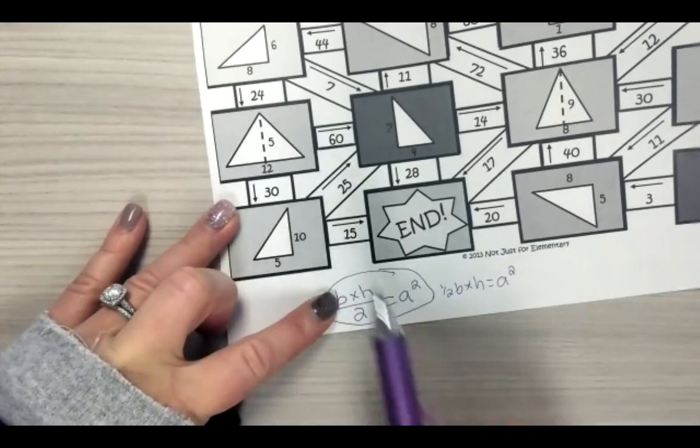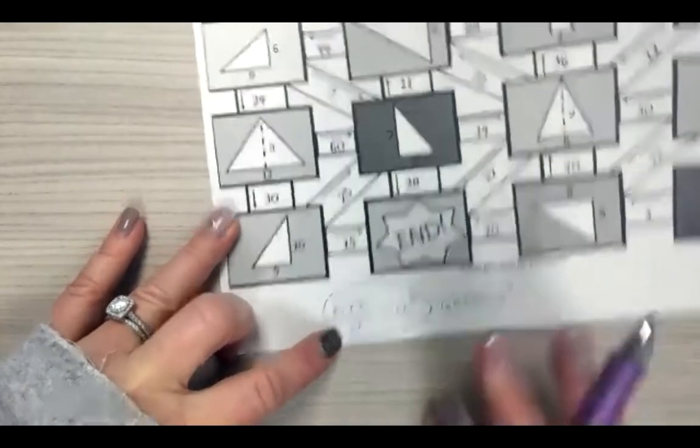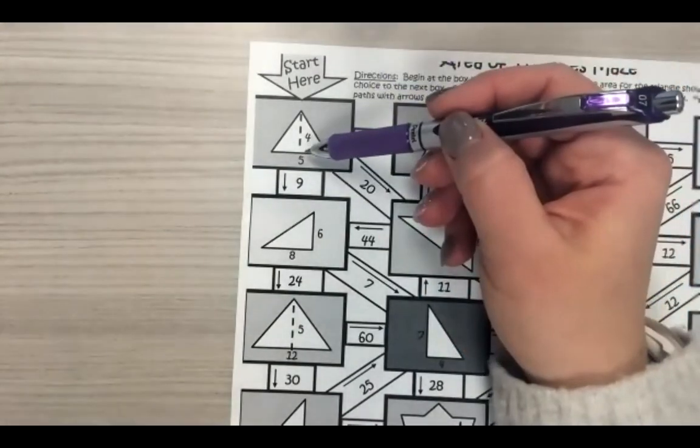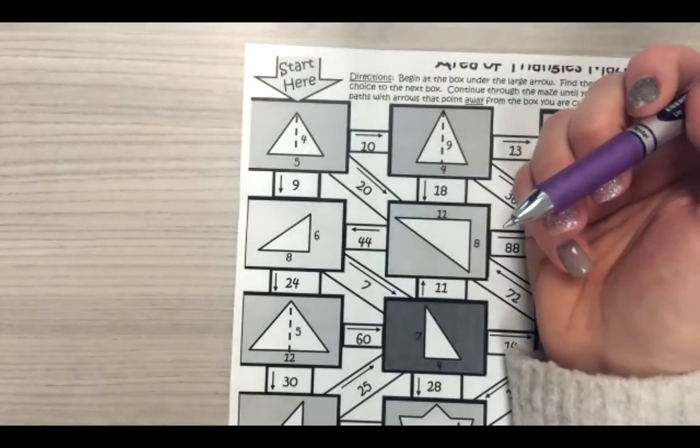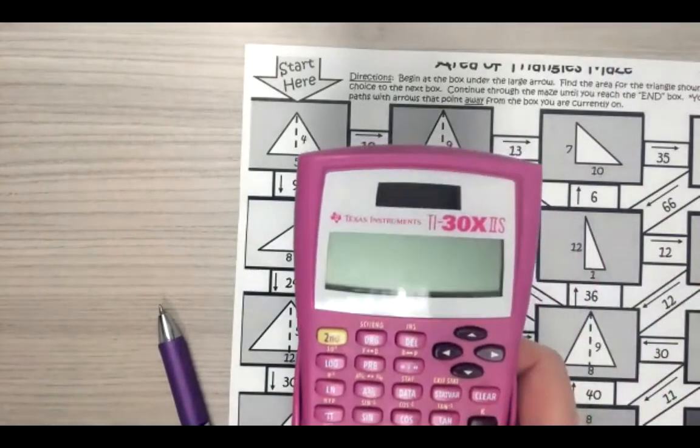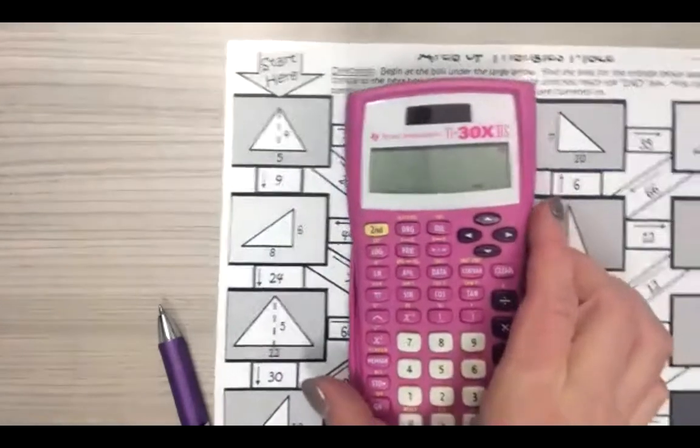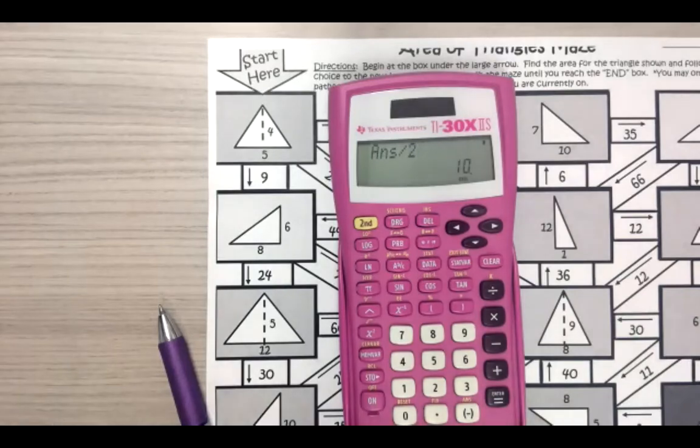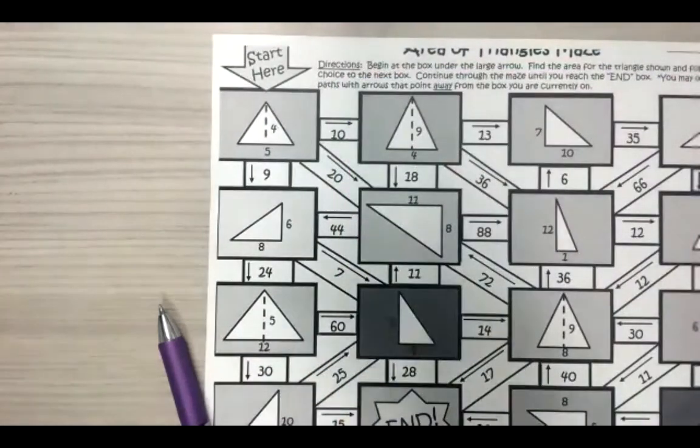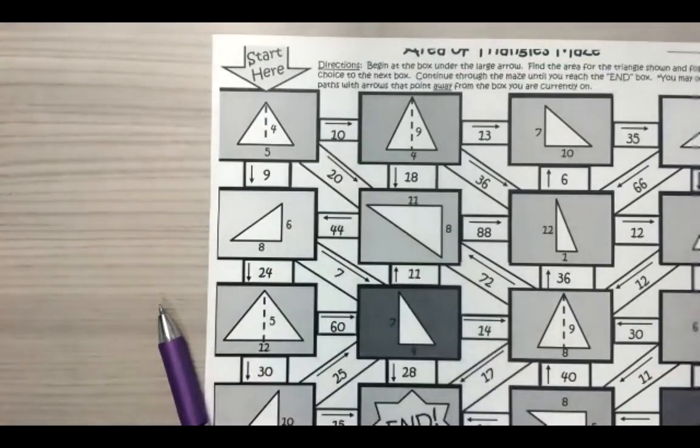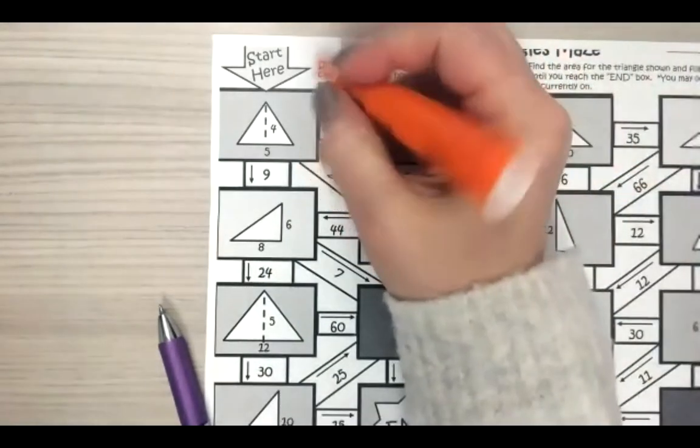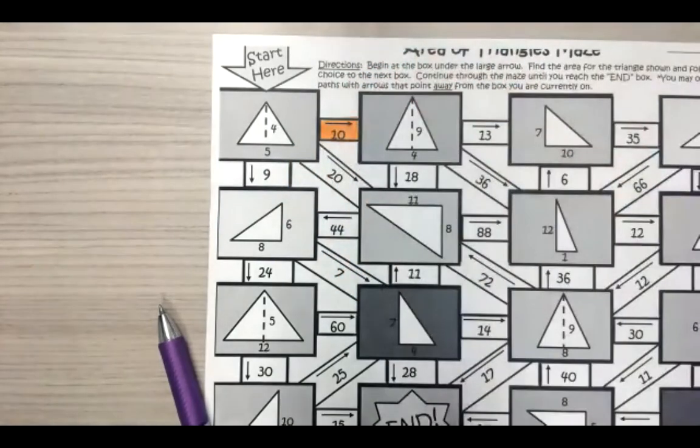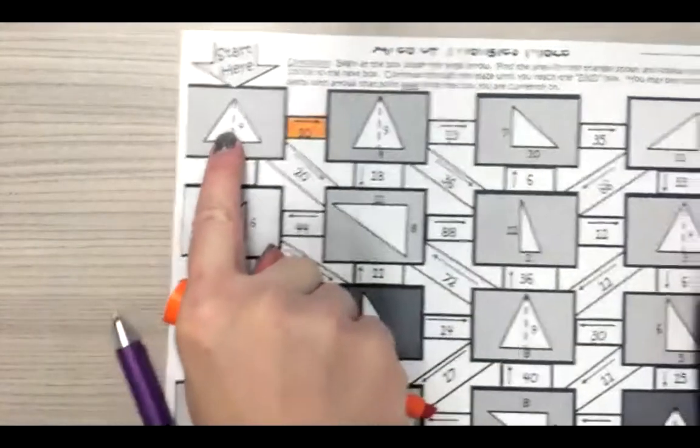But since a triangle is half of a rectangle, you have to divide by two. So I know that four times five is 20 and 20 divided by two is 10. I really needed to check that. Four times five equals 20 divided by two equals 10. Look at that. So our answer options were nine, 20 and 10. We know the answer is 10.